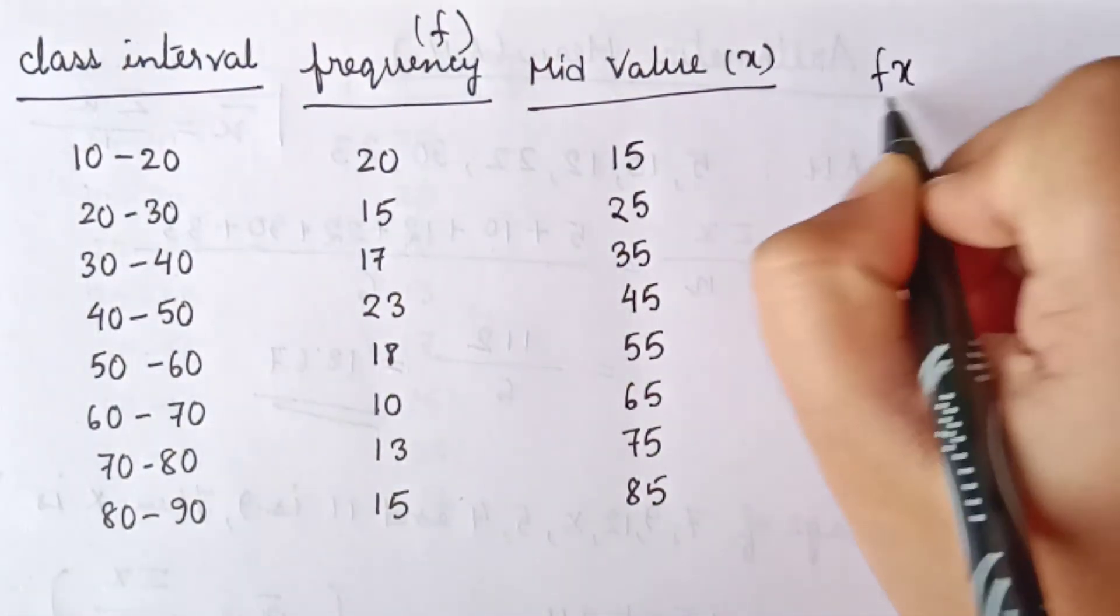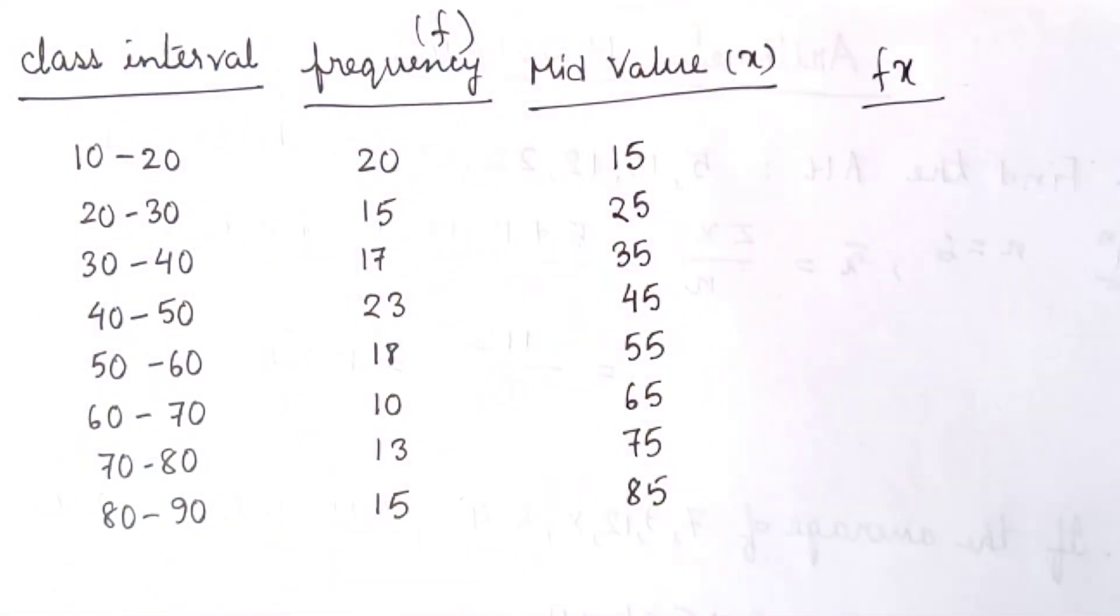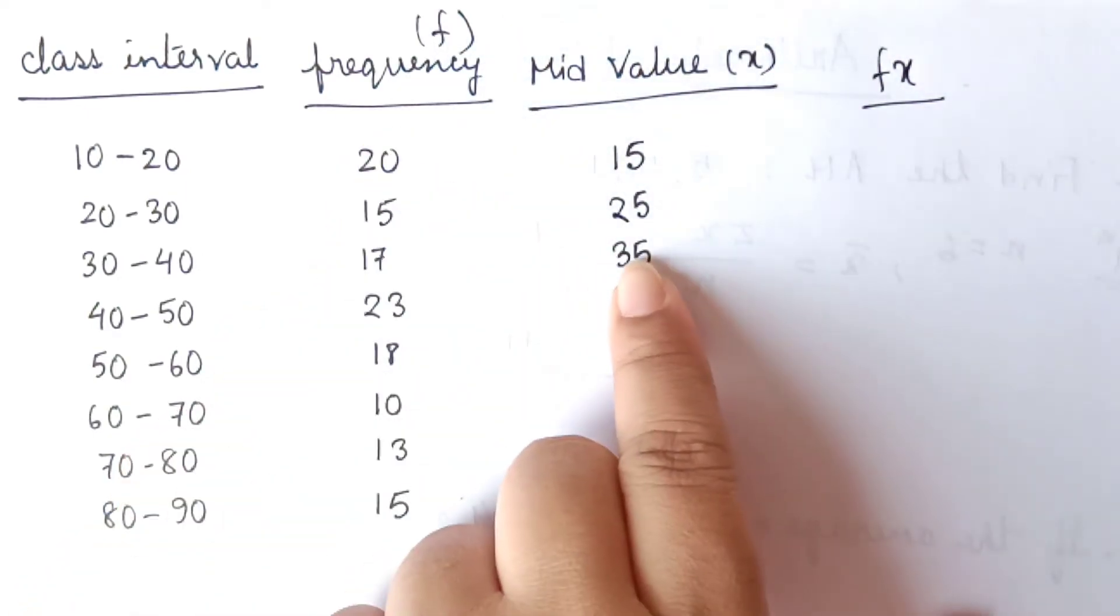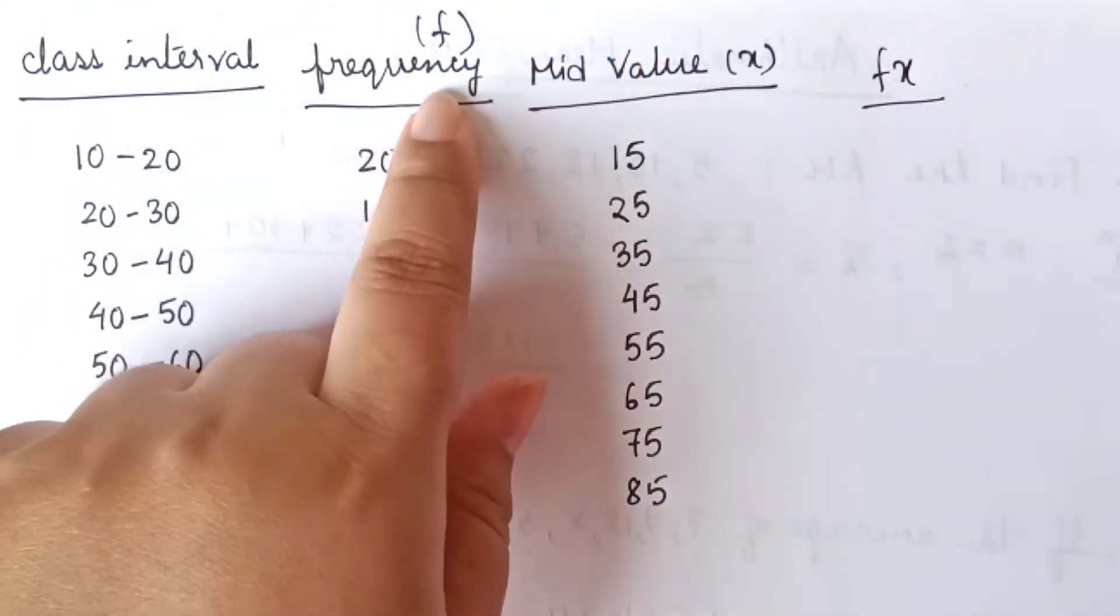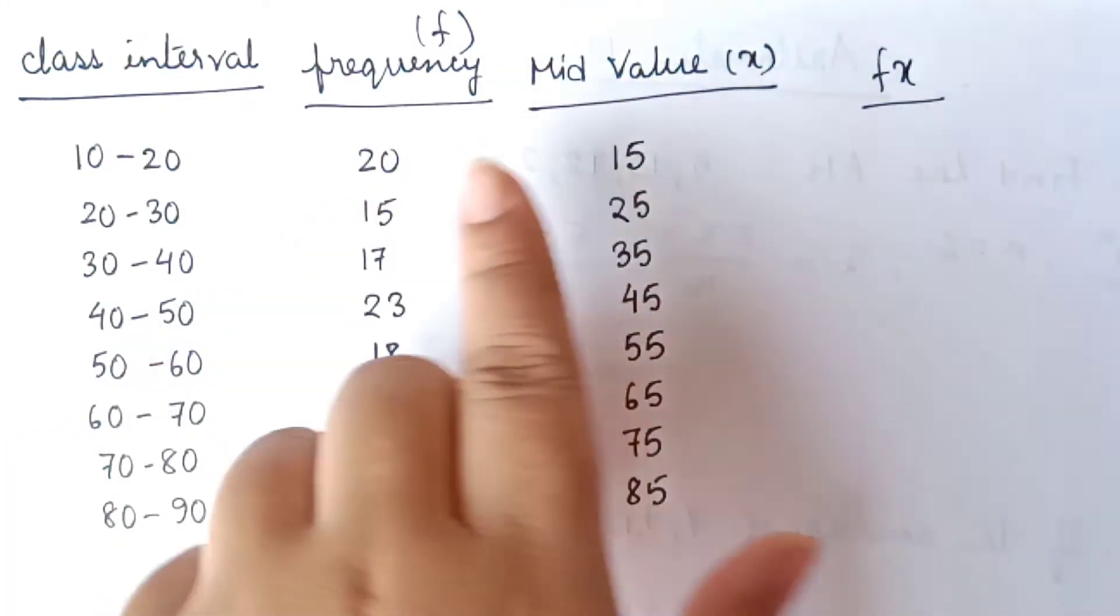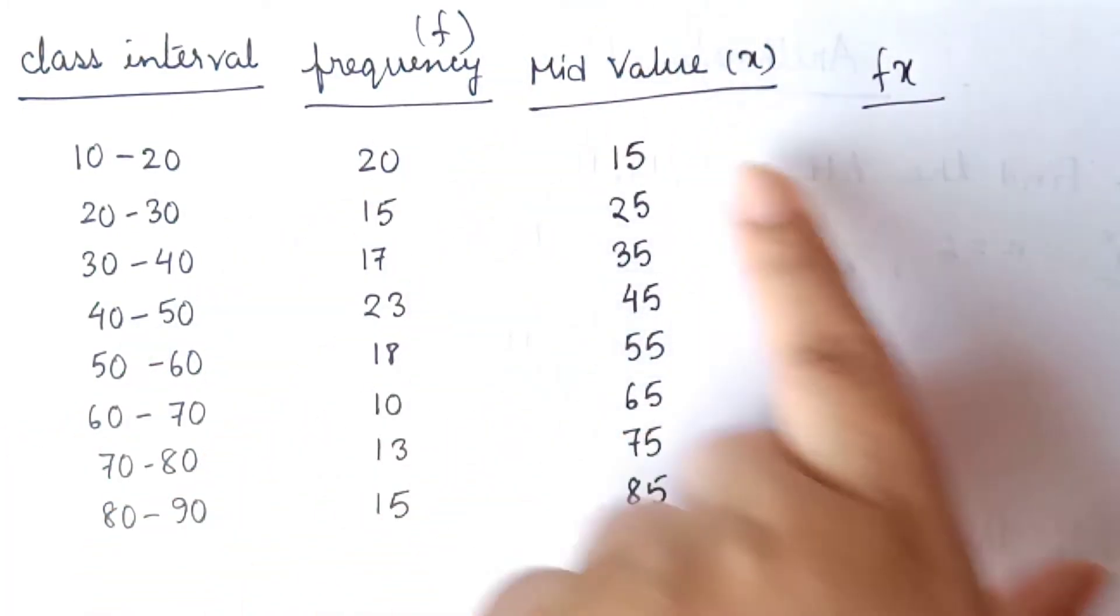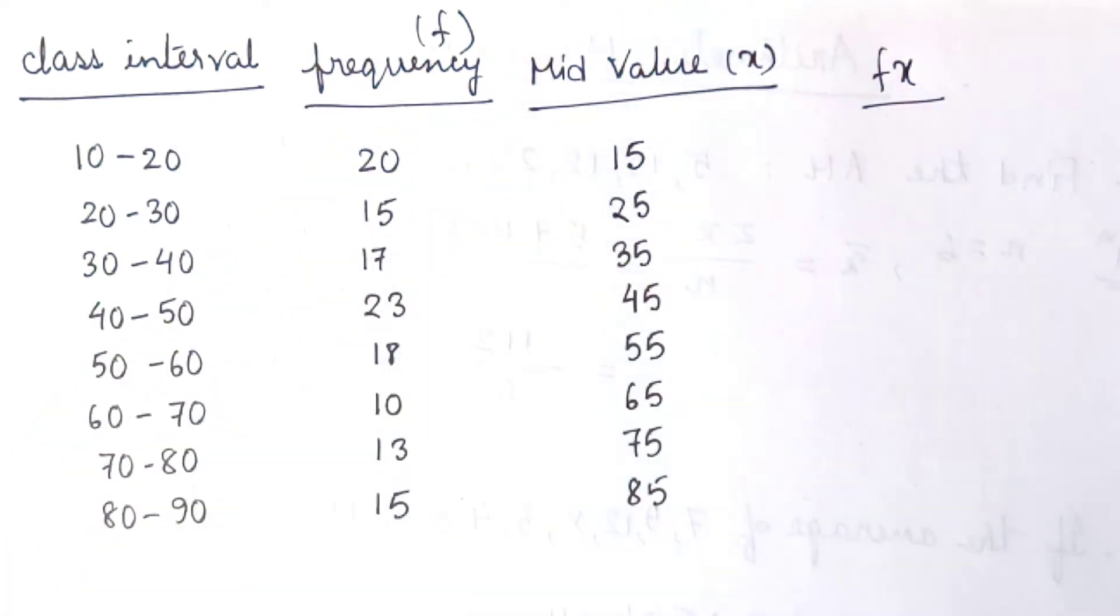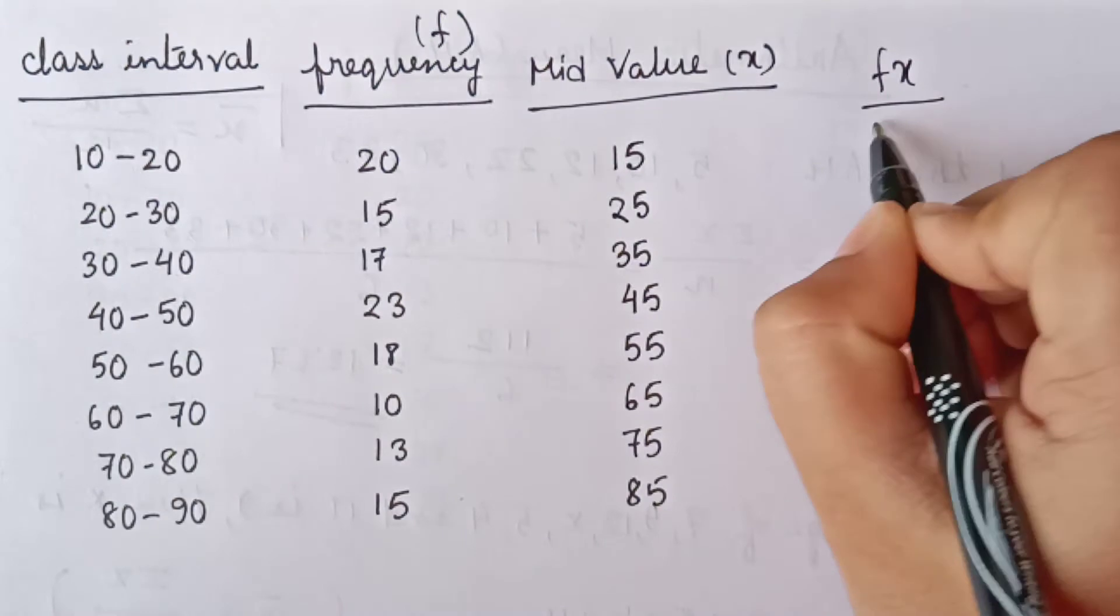After that, we will find out the column FX. The column FX means it is the product of the corresponding values of these two columns, frequency and the mid values. Frequency is denoted by F and mid value is denoted by X. So this is the corresponding product value of these two columns.